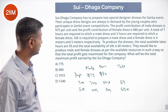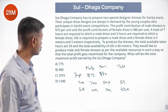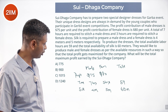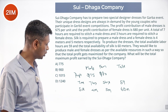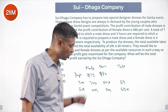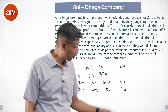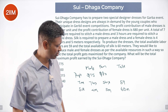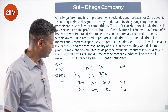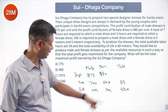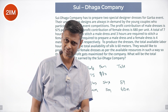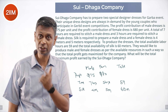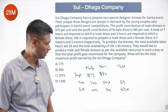They would like to produce male and female dresses as per the available resources in such a way as to maximize profits. We want to figure out how many units of each to make within these constraints — like an operations research problem. What is the maximum profit they can achieve? The numbers 59 and 60 are close, so we need to figure out which gives better returns.